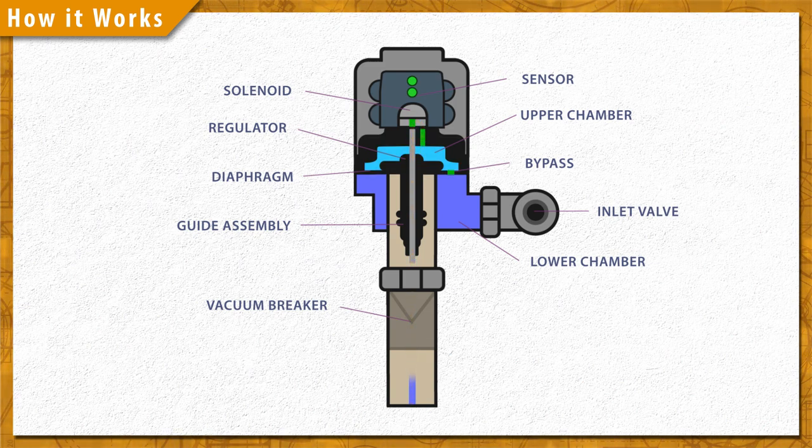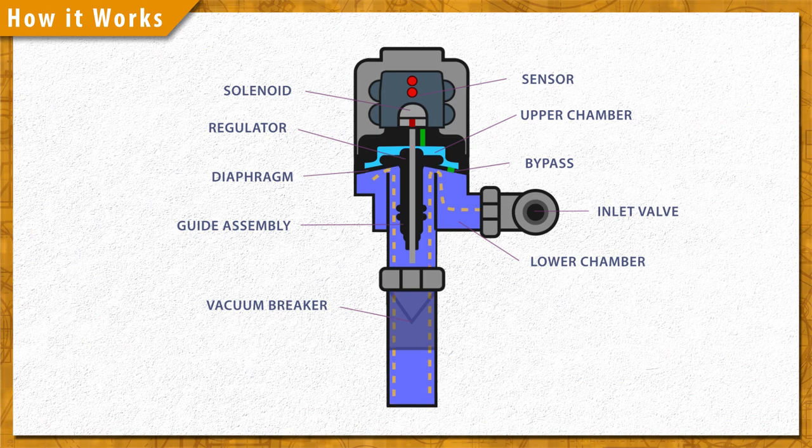High pressure water from the inlet now lifts the diaphragm up and travels down the flush pipe.